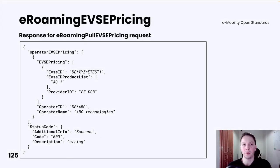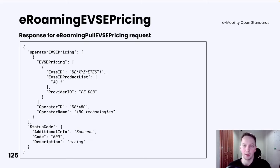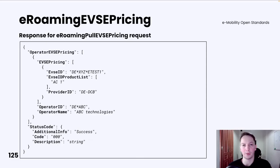The response for the eRoaming pull EVSE pricing request is a list of operator EVSE pricing. Each object contains a list of EVSE pricing offered by a specific operator. Each EVSE pricing object has a list of pricing products that can be assigned to a given EVSE. If that offer is specific only to you, you will see your provider ID in this object. In case the data is available to everyone, you will see an asterisk character as the value for the provider ID field.